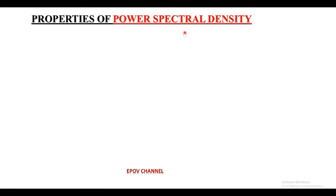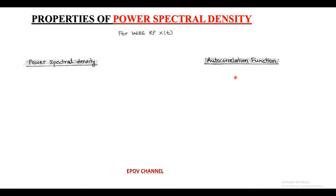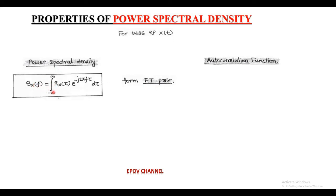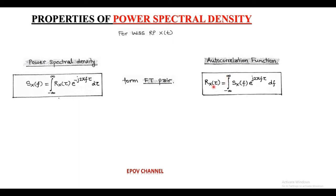Next, we move to the properties of power spectral density of random process x(t). For a wide sense stationary random process x(t), the power spectral density and the autocorrelation function form a Fourier transform pair. That is, S(f) = ∫ r(τ) e^(−j2πfτ) dτ, which is the Fourier transform of autocorrelation function r(τ). Also, the autocorrelation function can be obtained using the inverse Fourier transform: r(τ) = ∫ S(f) e^(j2πfτ) df. This Fourier transform pair is called the Einstein-Wiener-Khinchin relation.